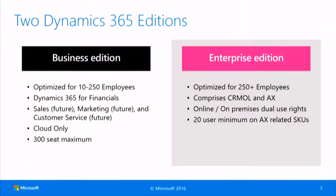There are actually two versions. We just talked about the enterprise version. We do have a 20 user minimum requirement. That is different to AX7 a couple of months ago — there was a 50 user minimum. We do have right now a 20 user minimum on AX-related users. That's usually full user for the app operations or the plan two user. There's no minimum for CRM users.